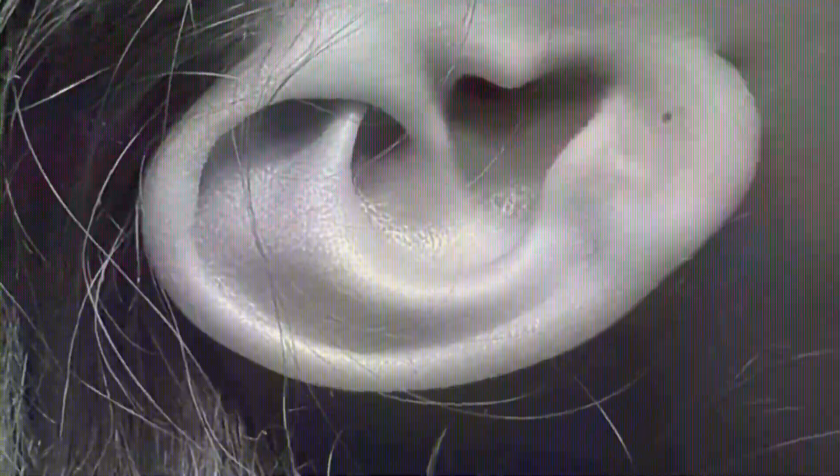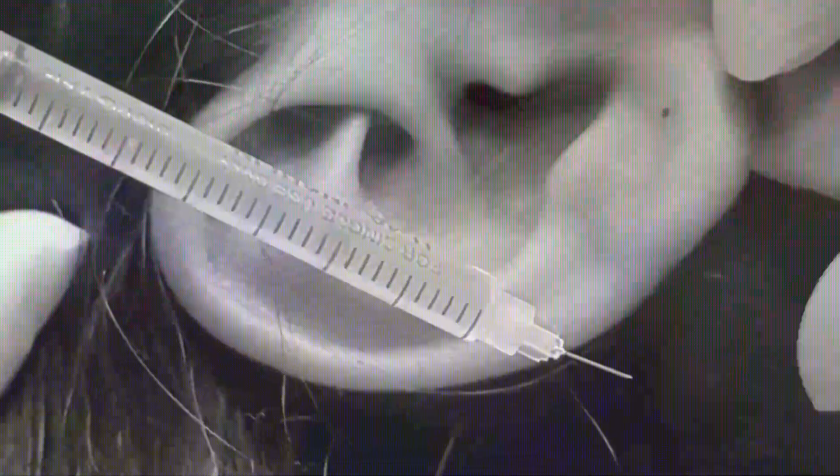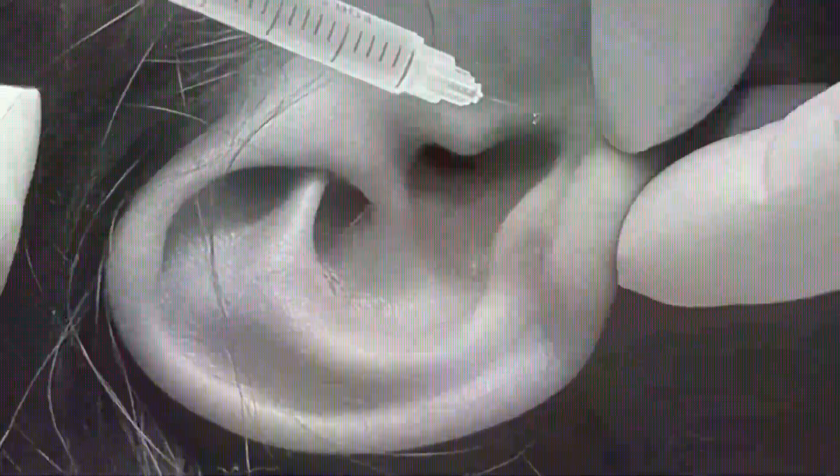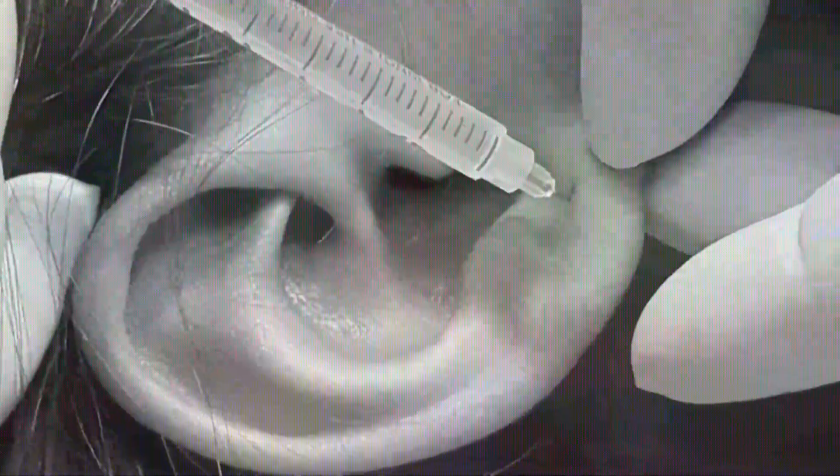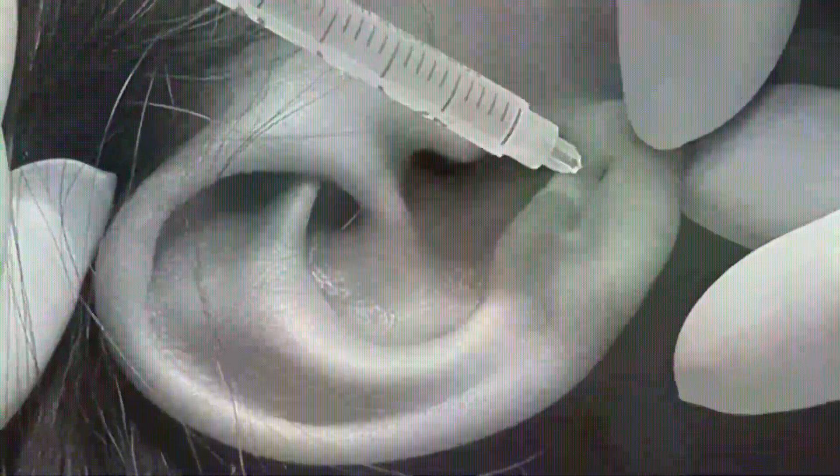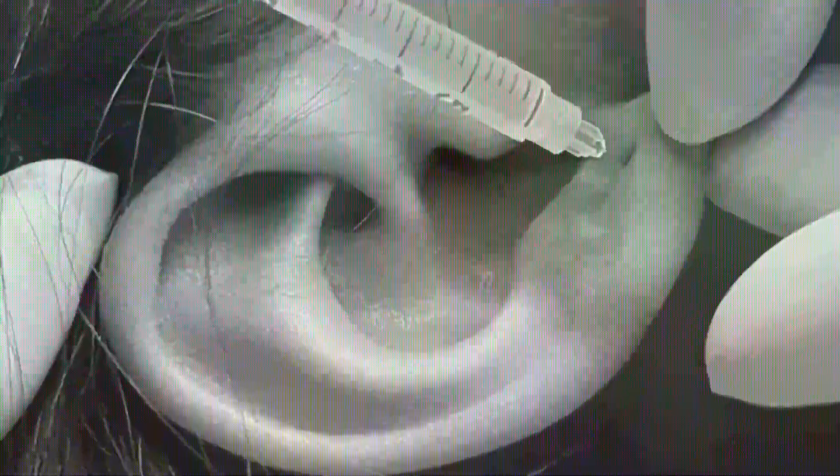Now here you just use thirty-one gauge needle and anesthetize it. Just anesthetize it. Now inject a few drops of local anesthetic solution here, on this side.